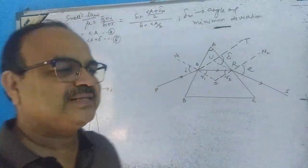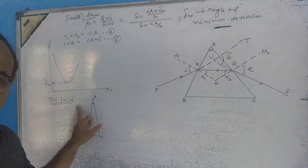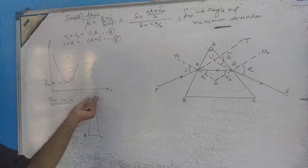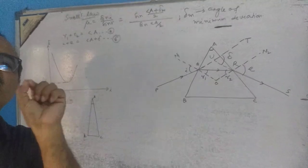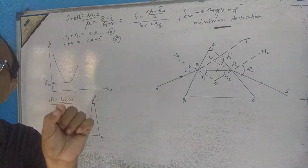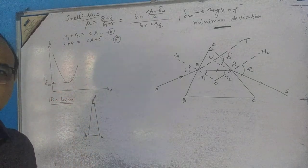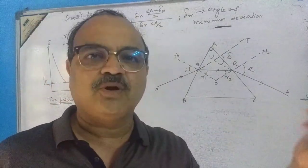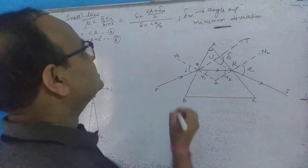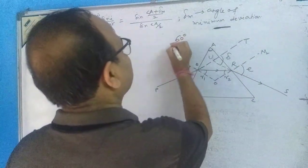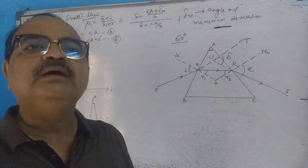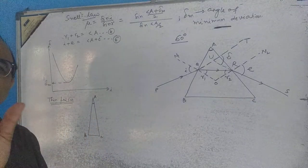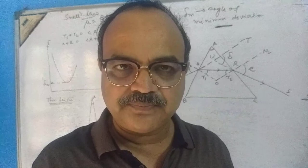What is a thin prism? A thin prism is one whose angle is very, very small — one or two degrees. In a normal equilateral prism, the angle of the prism is around 60 degrees. But in the case of a thin prism, the angle of the prism is very, very small — nearly one or two degrees.